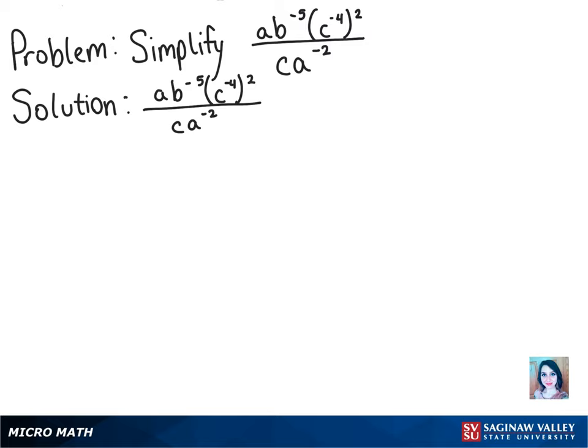To simplify this problem, we know that we can start with the c because it has an exponent that's being multiplied by another exponent. So let's take care of that first.